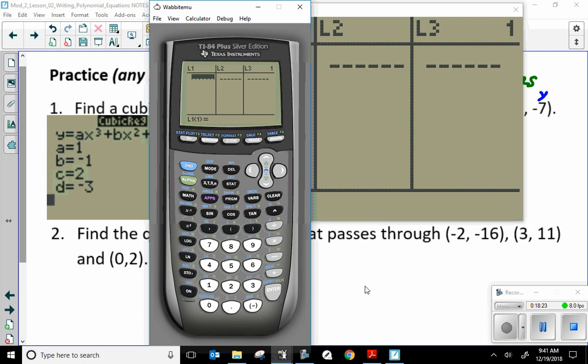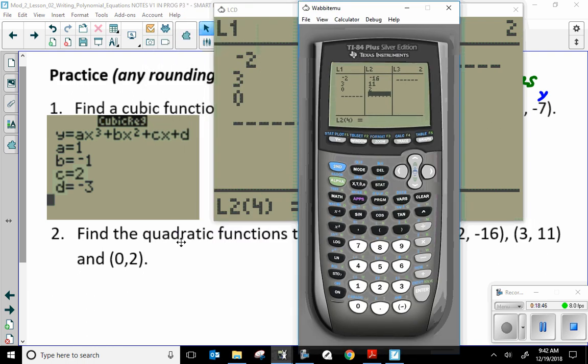My X is negative 2. 1, 2, 3, and 0. Now, I want to put my Ys. Negative 16. 11. And 2. And they want us to come up with, what? A quadratic.